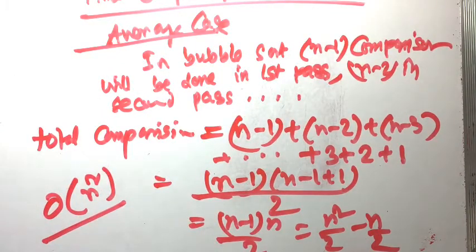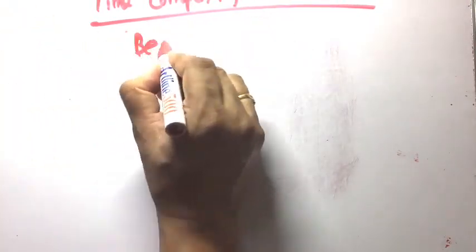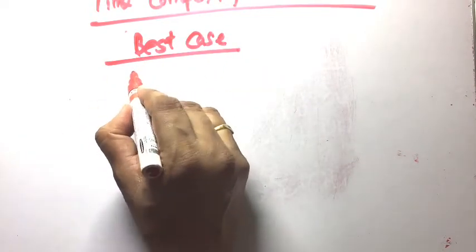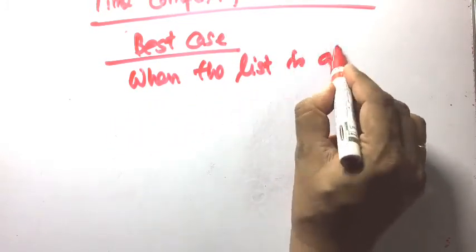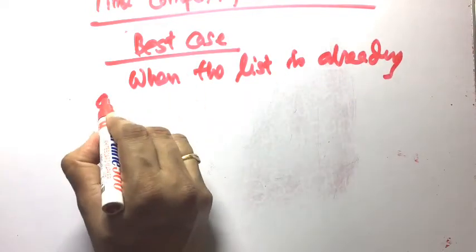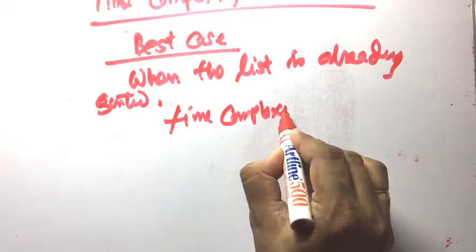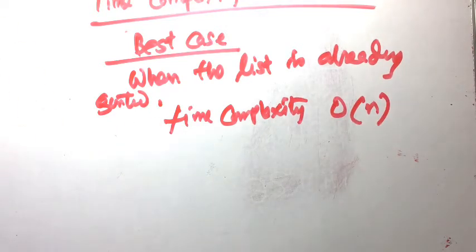The dominant polynomial is n square. So this is the average case time complexity of bubble sort — O(n²). Now the best case and worst case. In the best case, when the list is already sorted, time complexity is O(n) — only n comparisons are needed. This is the best case time complexity.